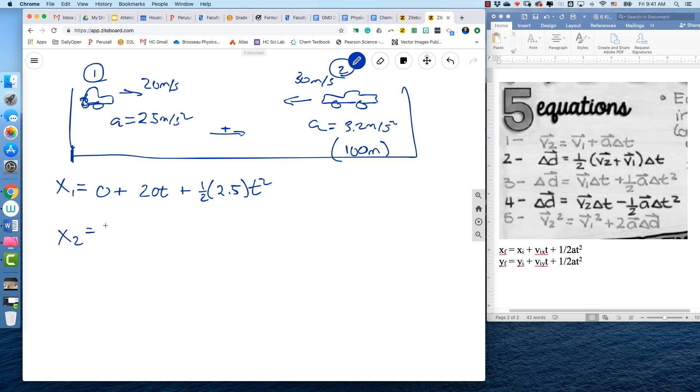Car 2, this is 100 meters plus—now this is important—negative 30t. Does that make sense? Because he's moving in the negative direction, plus 1 half. And this is where it's important. So I put negative 3.2 or positive 3.2. It's 3.2 t squared.